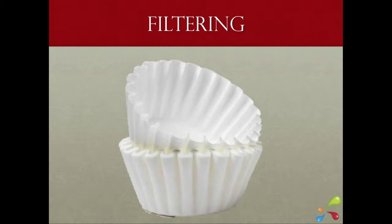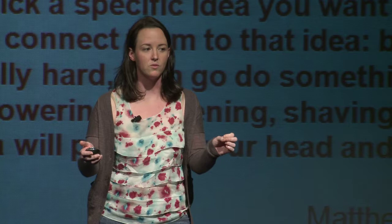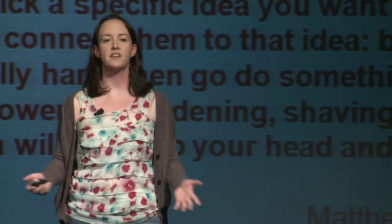Now we're down to filtering. Matt Inman calls it brain farming — taking everything and narrowing it down, simmering on it, and coming up with the idea when you're just out doing something else. This is classic brainstorming. From my list, these are the most interesting things I came across: The Matrix, summer, death — what else are you going to think of when somebody's that high up in the air? You wonder how many people fall. Towers, Donald Trump, New York, summer.